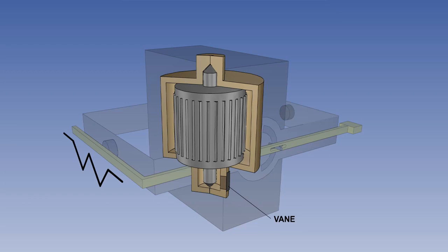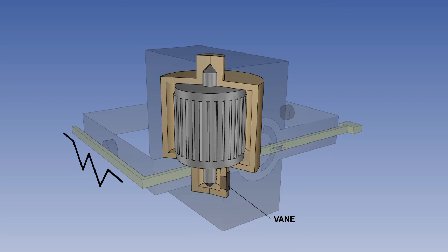The centre of gravity of the gyro is also kept below its pivot point on the inner gimbal to assist in keeping the gyro vertical when not in use. If we look at a diagrammatic view of the gyro and rotor housing, we can see that at the base of the rotor housing there are four air exhaust ports, each partially covered by a pendulous vane.